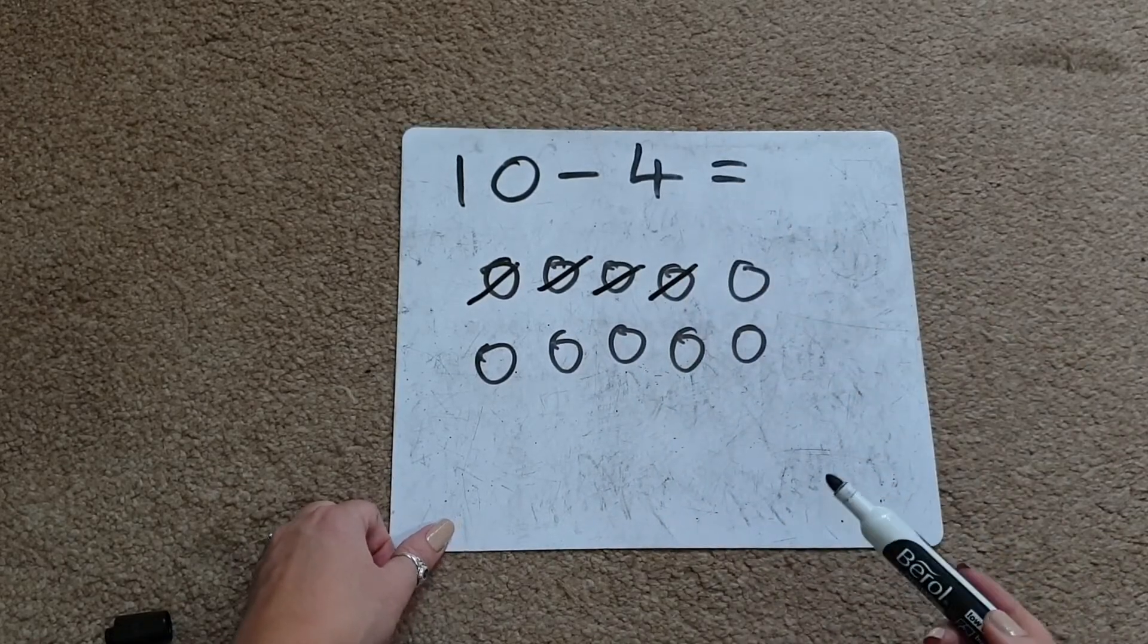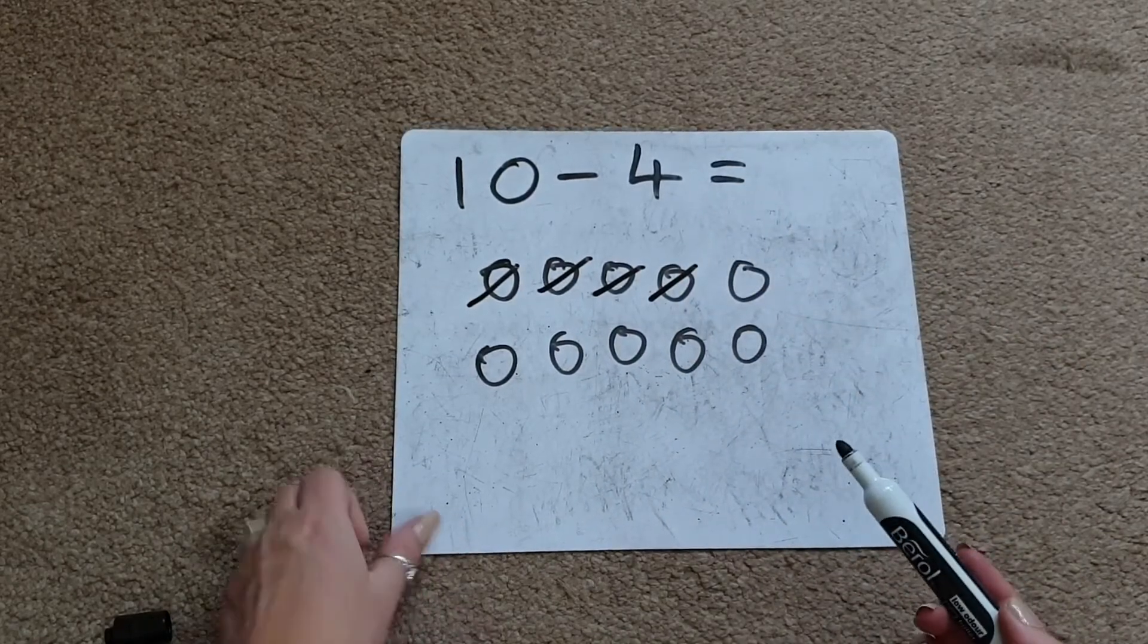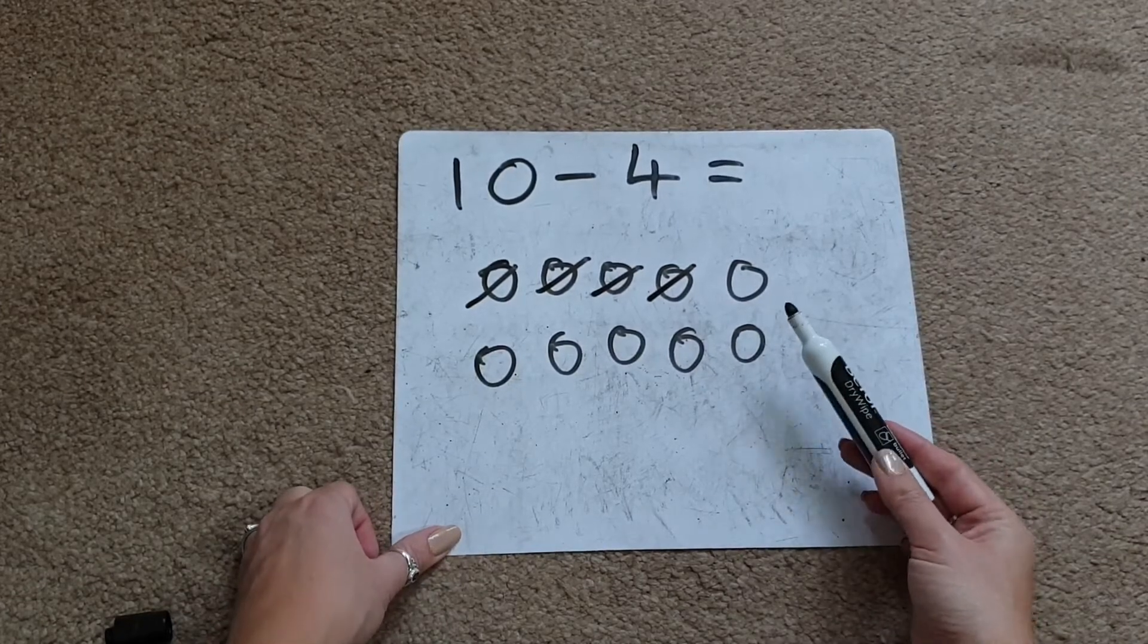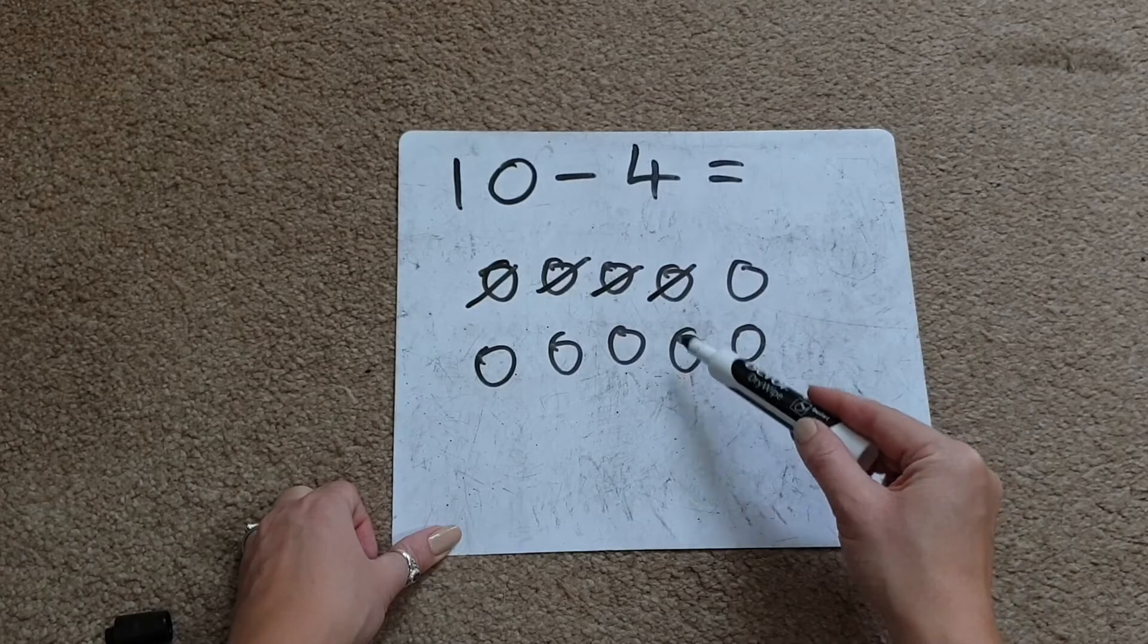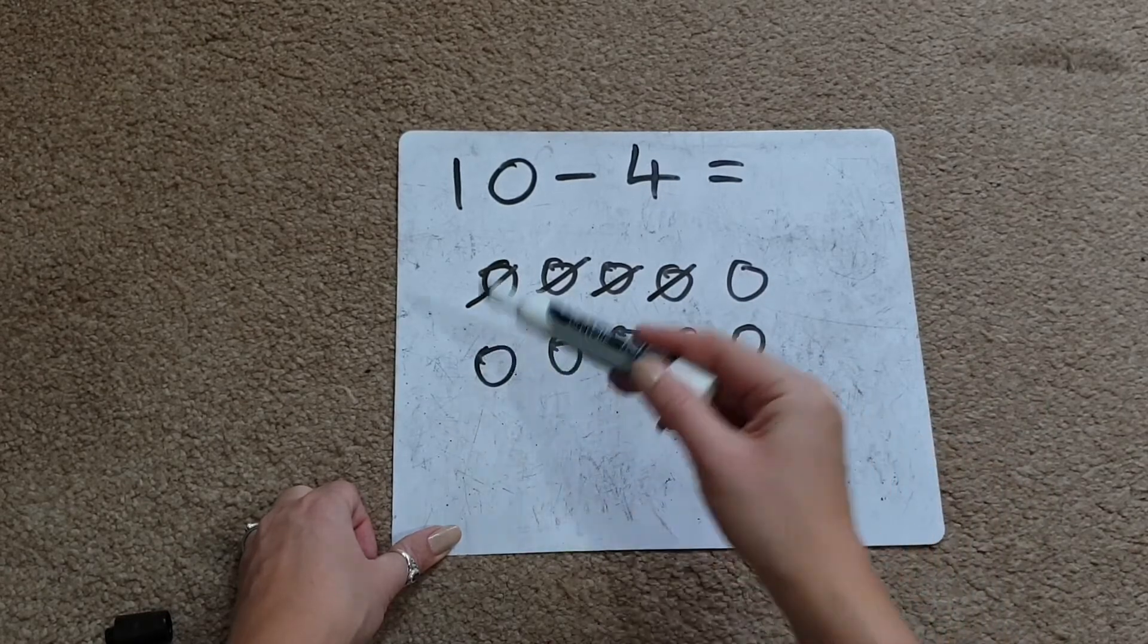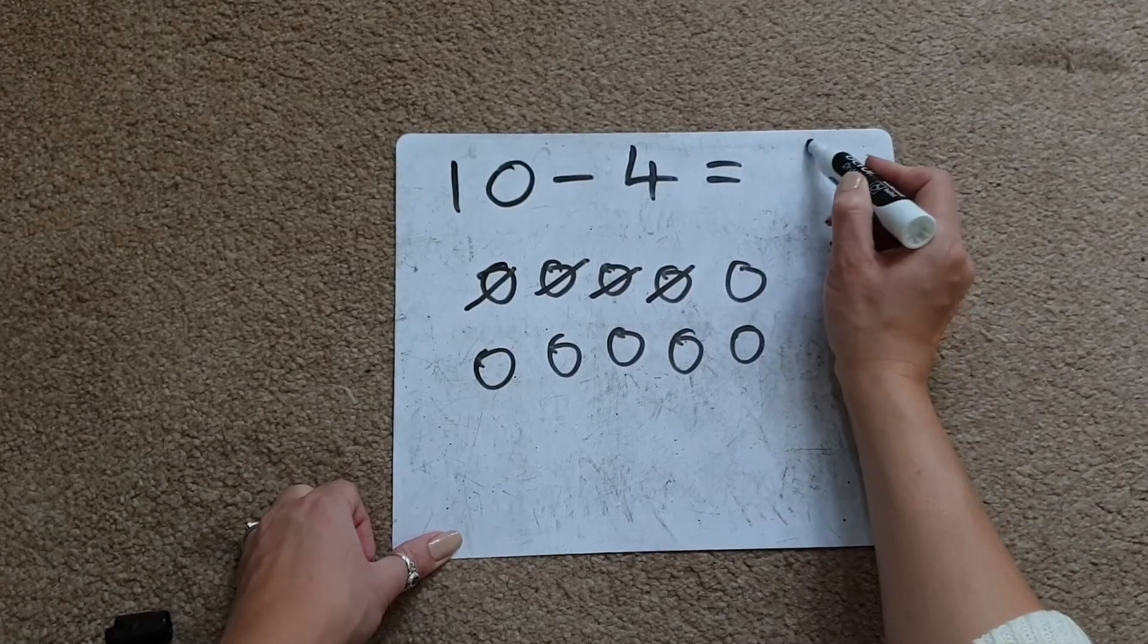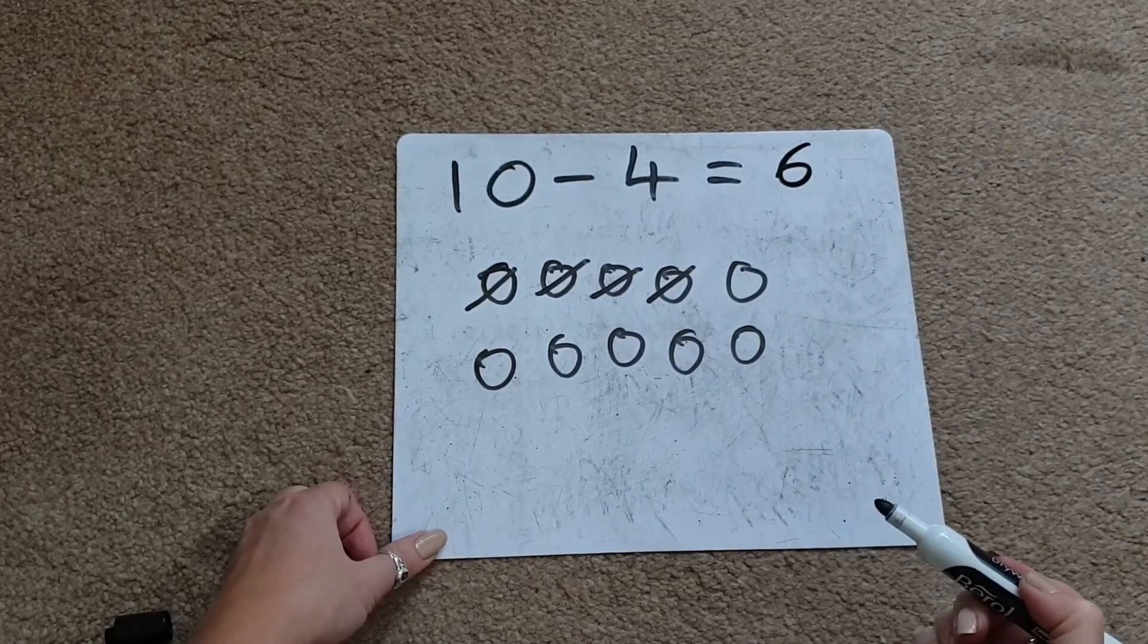And then to get our answer, the children would then count how many objects or circles that they have left that aren't crossed out. 1, 2, 3, 4, 5, 6. So 6 would be our answer. So the children can then write number 6 at the end of the calculation to show their answer.